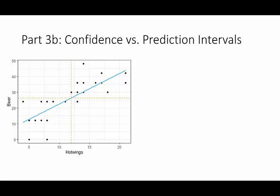On the first slide of part 3a we looked at this graphic of hot wings versus beer. We raised the question: if the restaurant wants to start selling 12-packs of hot wings, how much beer should they expect to sell per customer? We could use the least squares line to estimate about 26 ounces, but it would be better to give a range — and an even bigger range — such that we're 95% confident any customer buying 12 hot wings will buy between L and U ounces of beer.